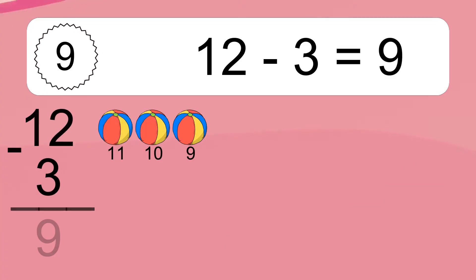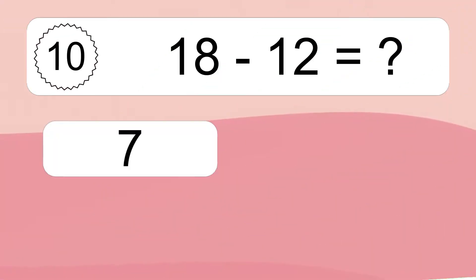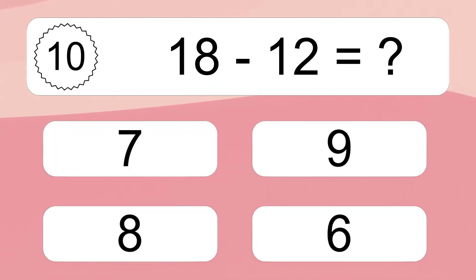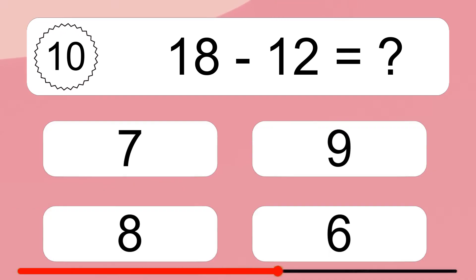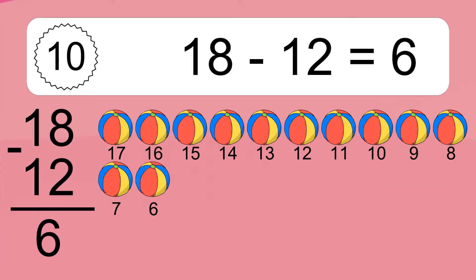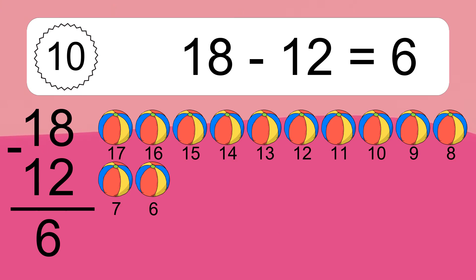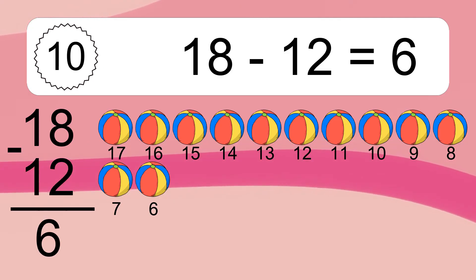12 minus 3 equals what? 12 minus 3 equals 9. Let's count it: 11, 10, 9. 18 minus 12 equals what? 18 minus 12 equals 6. Let's count it: 17, 16, 15, 14, 13, 12, 11, 10, 9, 8, 7, 6.